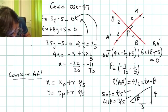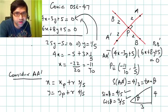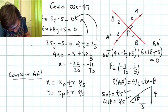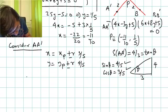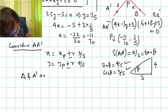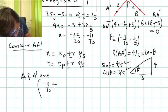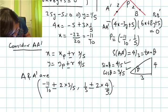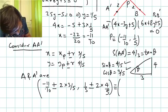We apply ±r since there are two points at a distance of two units from the fixed point P on line AA'. Substituting r = ±2: x = -11/10 ± 2·(3/5), y = 1/5 ± 2·(4/5). Taking the plus sign: x = -11/10 + 6/5 = 1/10, y = 1/5 + 8/5 = 9/5. So one point is (1/10, 9/5).